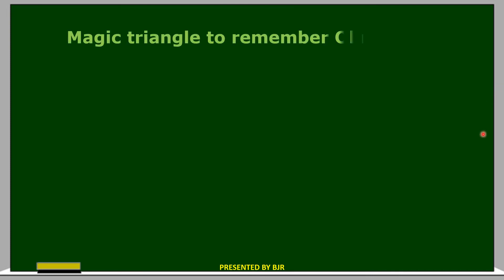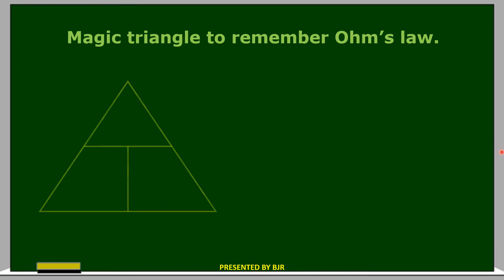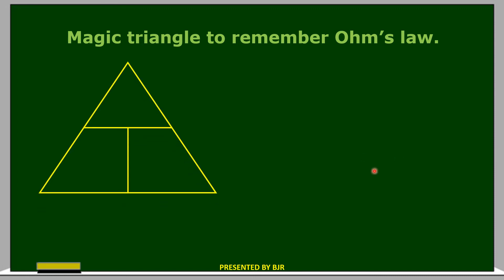Ohm's Law relates three physical quantities: voltage V, current I, and resistance R. Here is a magic triangle to remember Ohm's Law. If you want to find V, multiply I into R: V = IR. If you want I, divide V by R: I = V/R. If you want R, divide V by I: R = V/I. All these are the different forms of Ohm's Law.